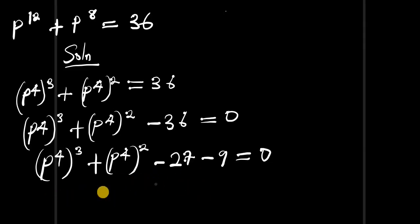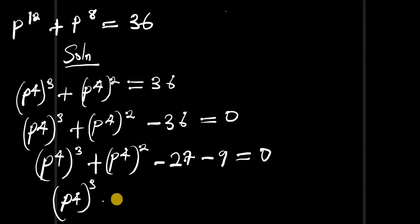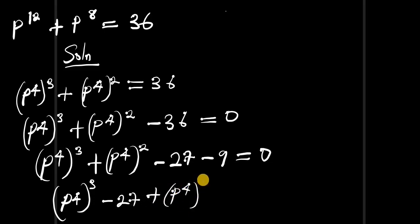Let's rearrange the whole equation. We have p to the power of 4, all to the power of 3, minus 27, then plus p to the power of 4, all to the power of 2, minus 9, equals zero. Let's continue in the next slide.